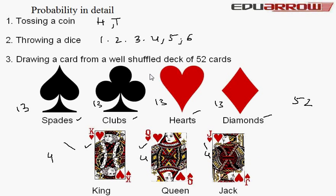King, queen, and jack are also known as face cards. So in a deck of cards, there are 12 face cards in total: 4 kings, 4 queens, and 4 jacks.